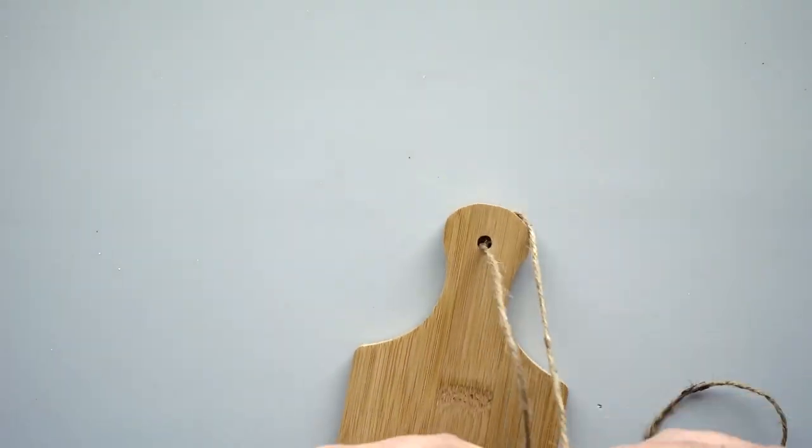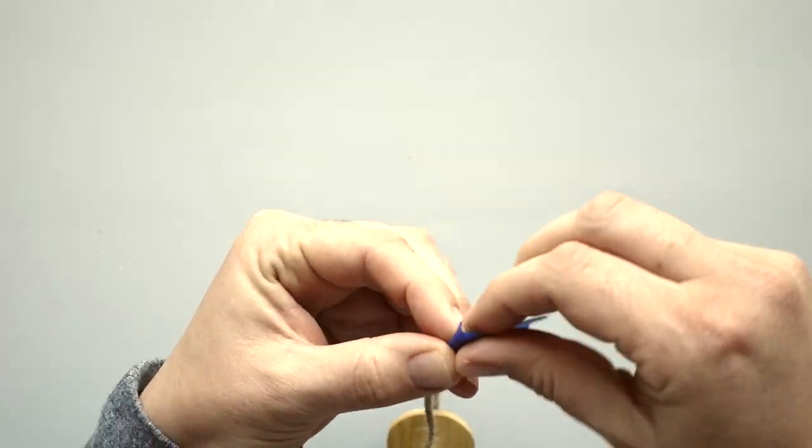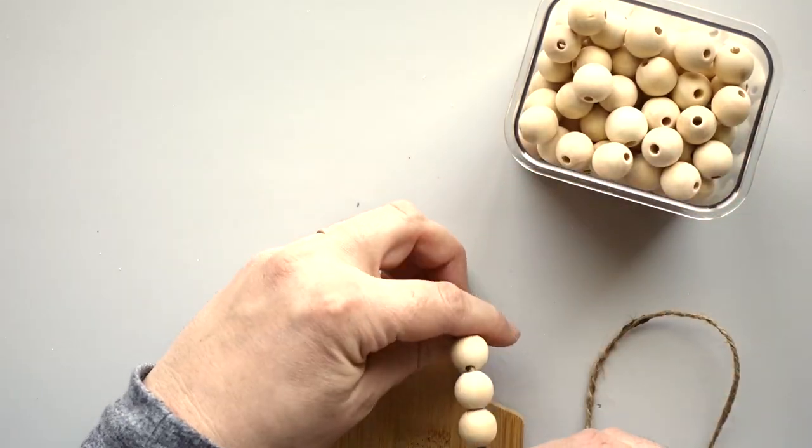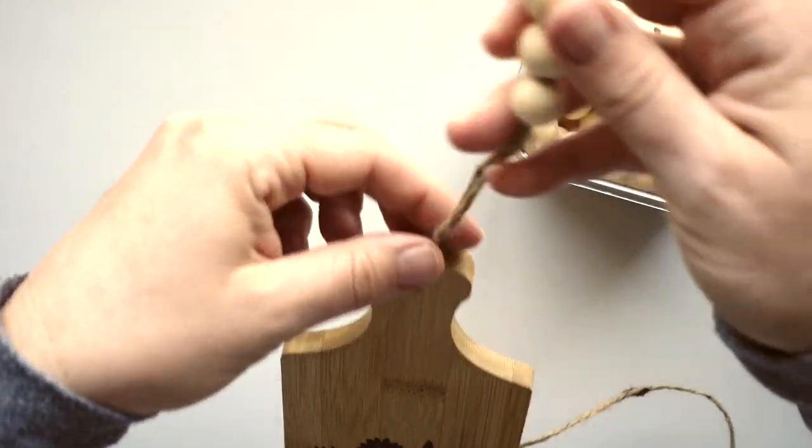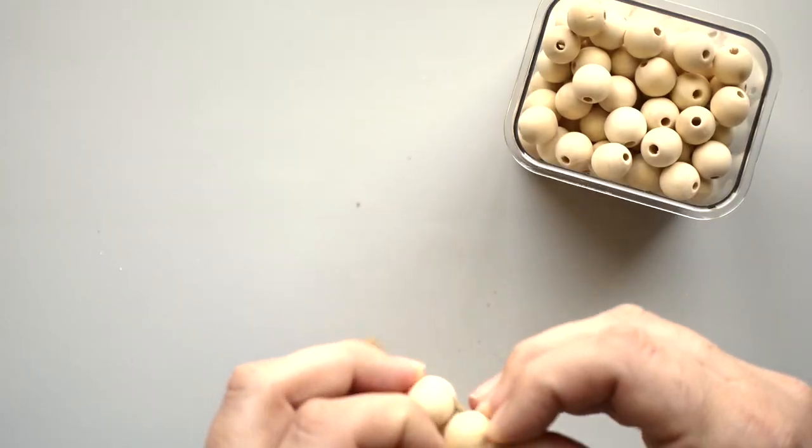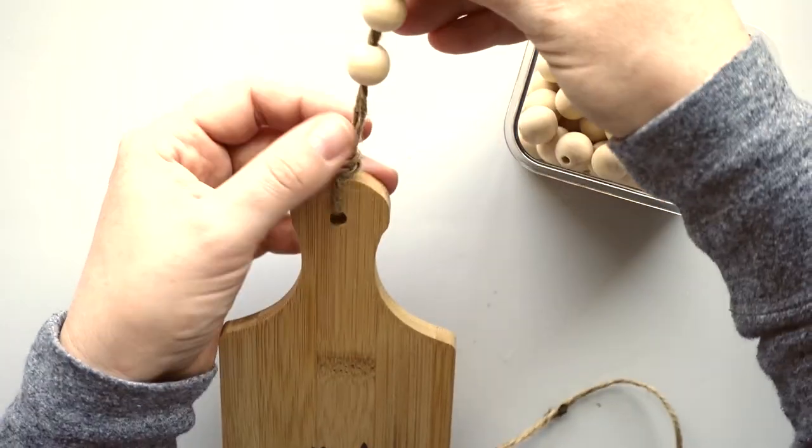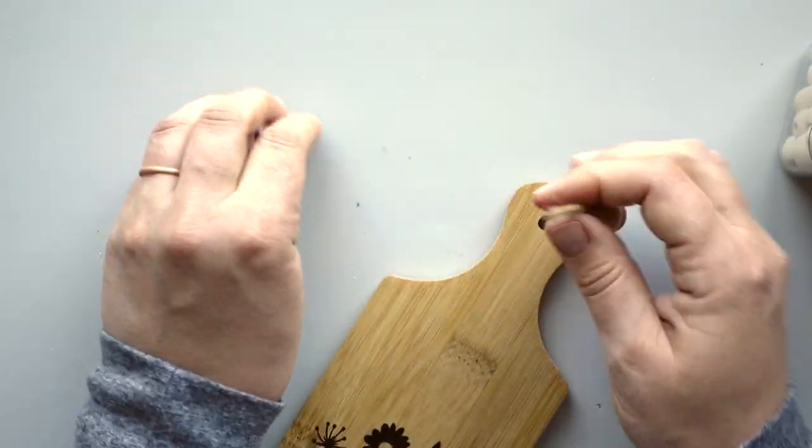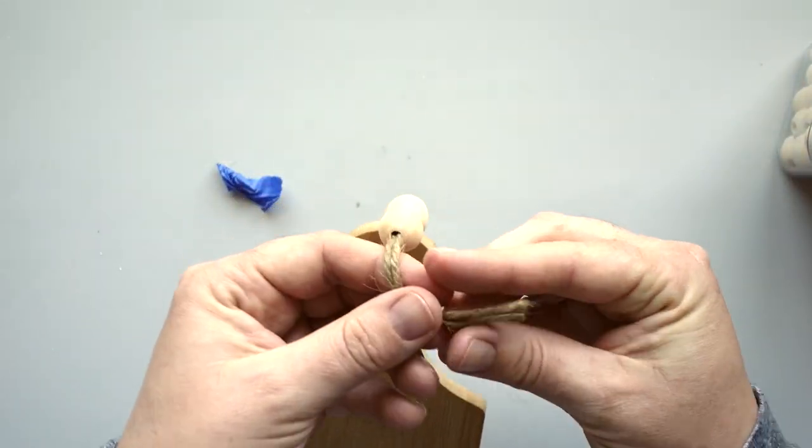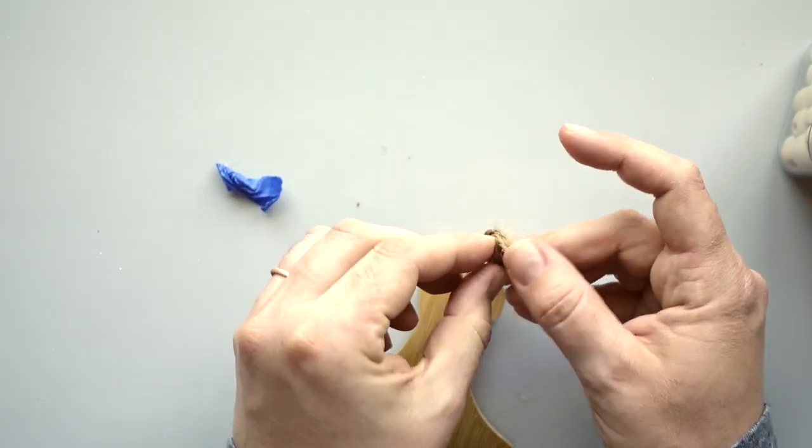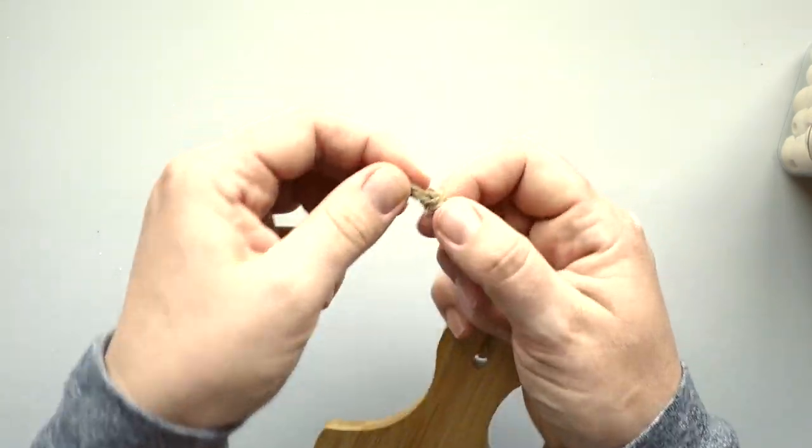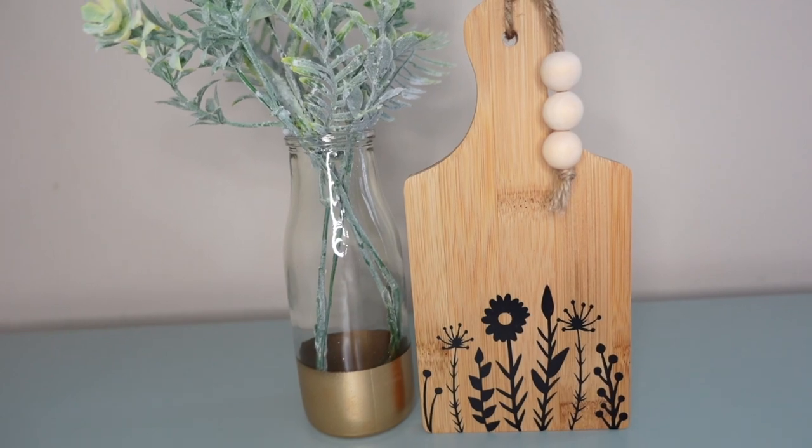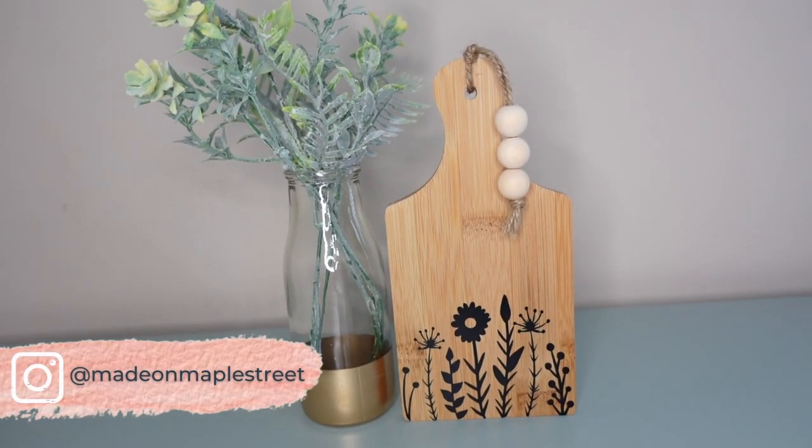Next, I put some jute twine through the hole at the top of the cutting board. I wrapped painter's tape around the ends of the twine and strung three wooden beads from Amazon onto the twine. I didn't like the way the beads hung, so I decided to tie a knot in the twine near the top of the cutting board. It definitely would have been easier if I had done that before stringing the beads, but I made it work. Then I removed the painter's tape and tied a knot in the end of the twine to finish off this fun piece. I think this fun piece turned out so cute. Are you on Instagram? I'd love to connect with you there. Come find me at Made on Maple Street.